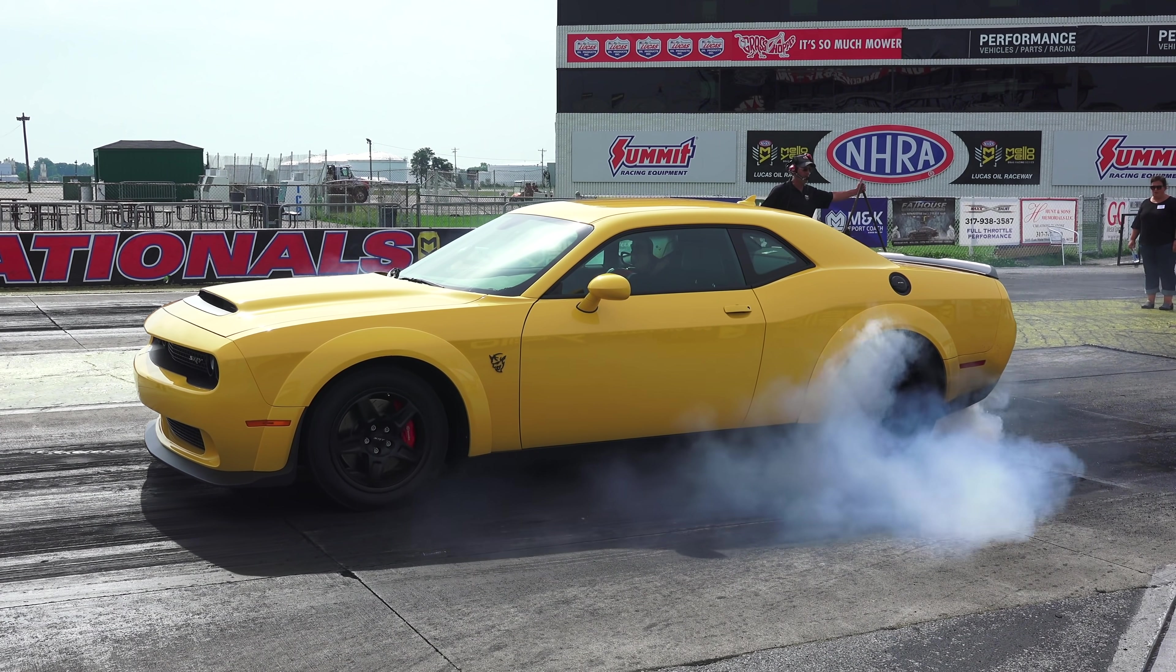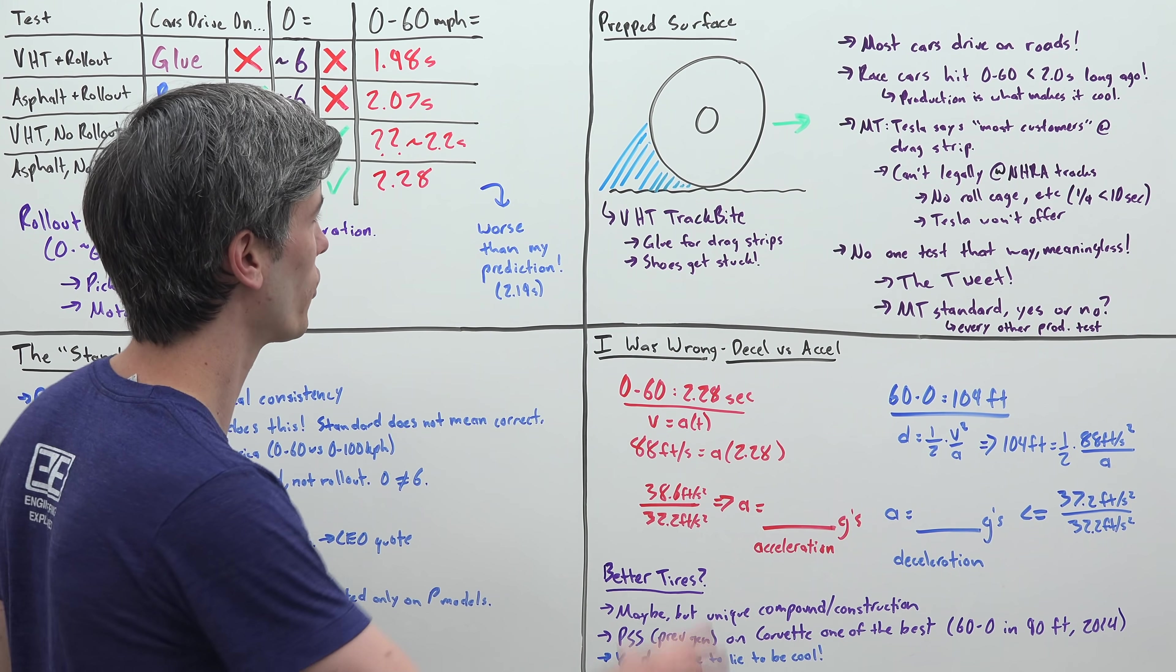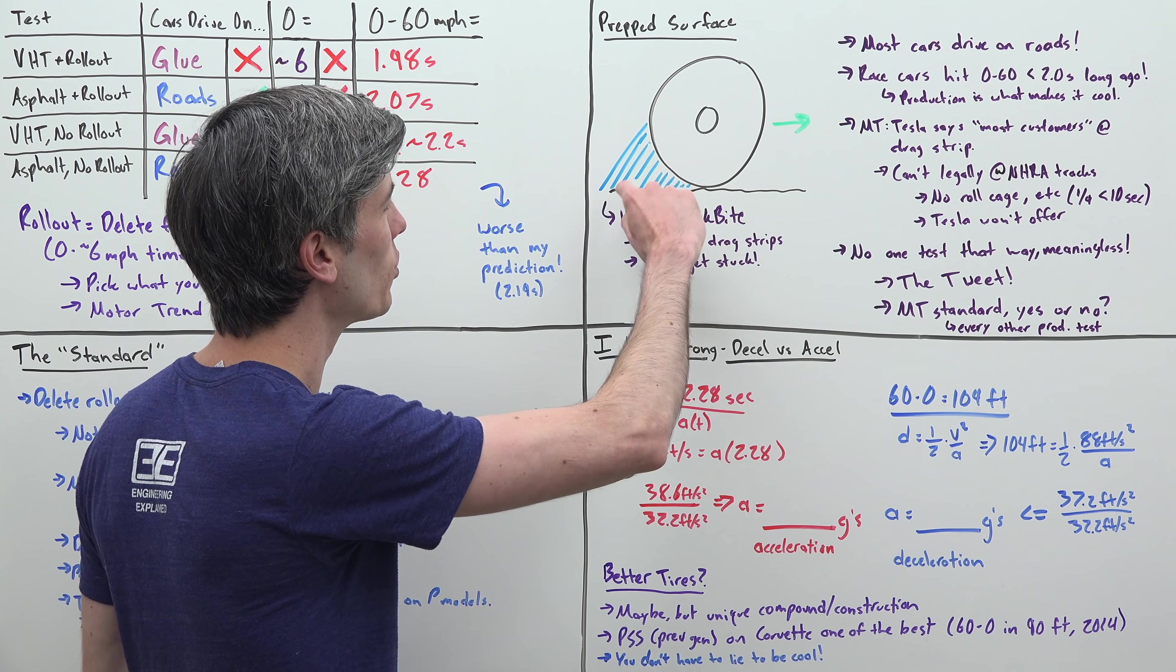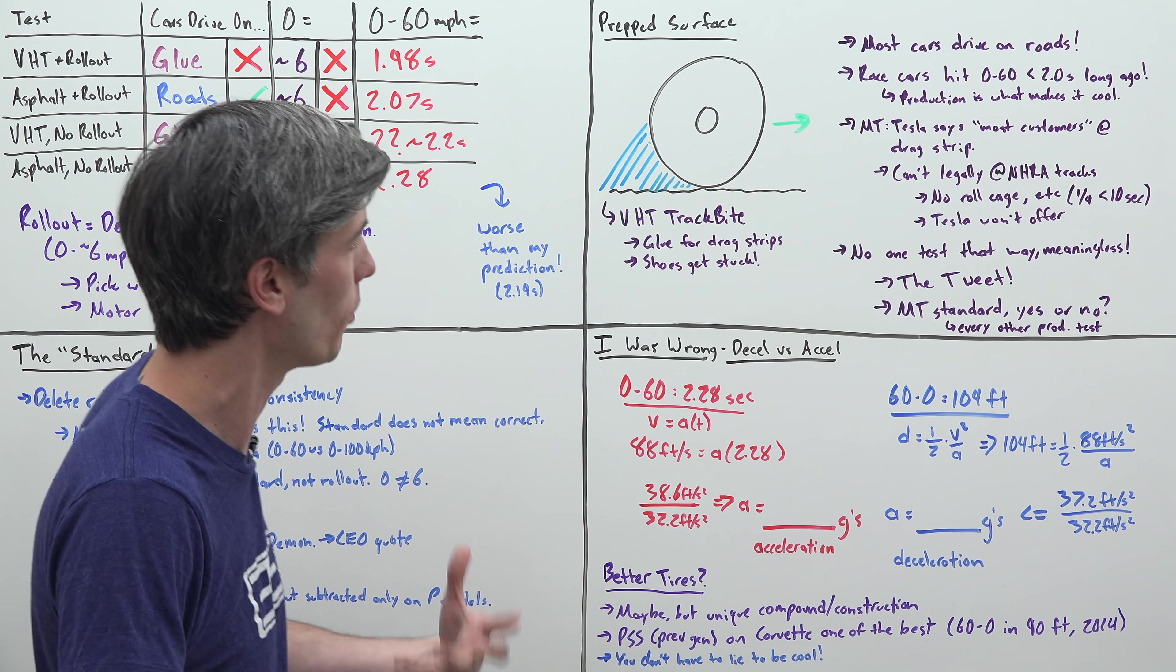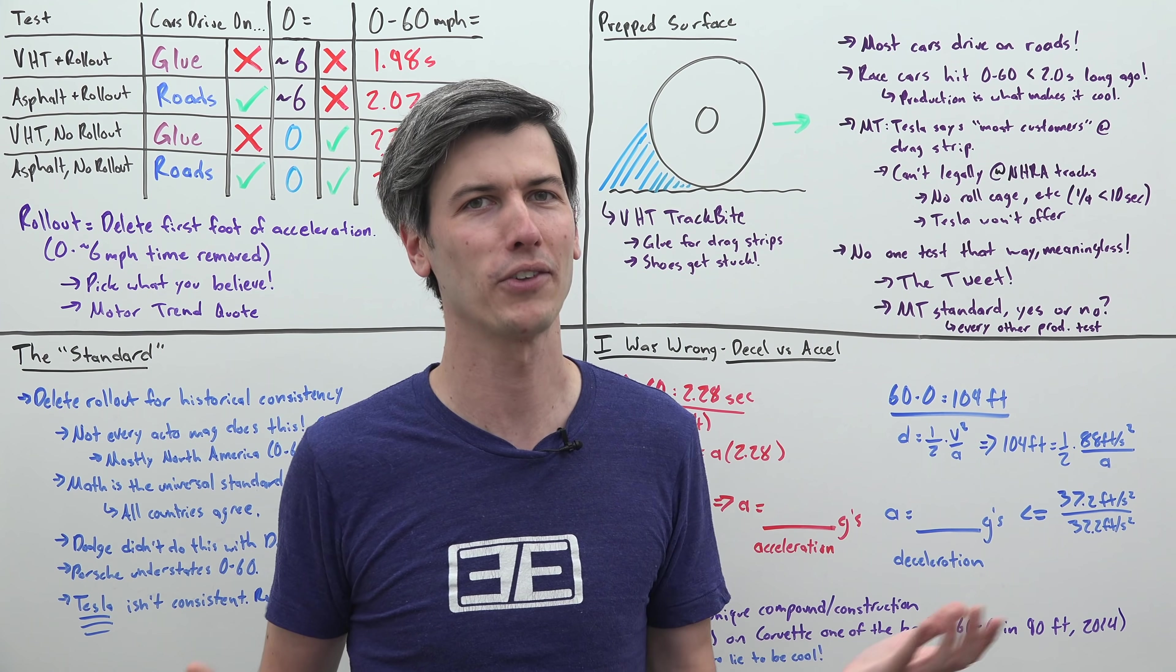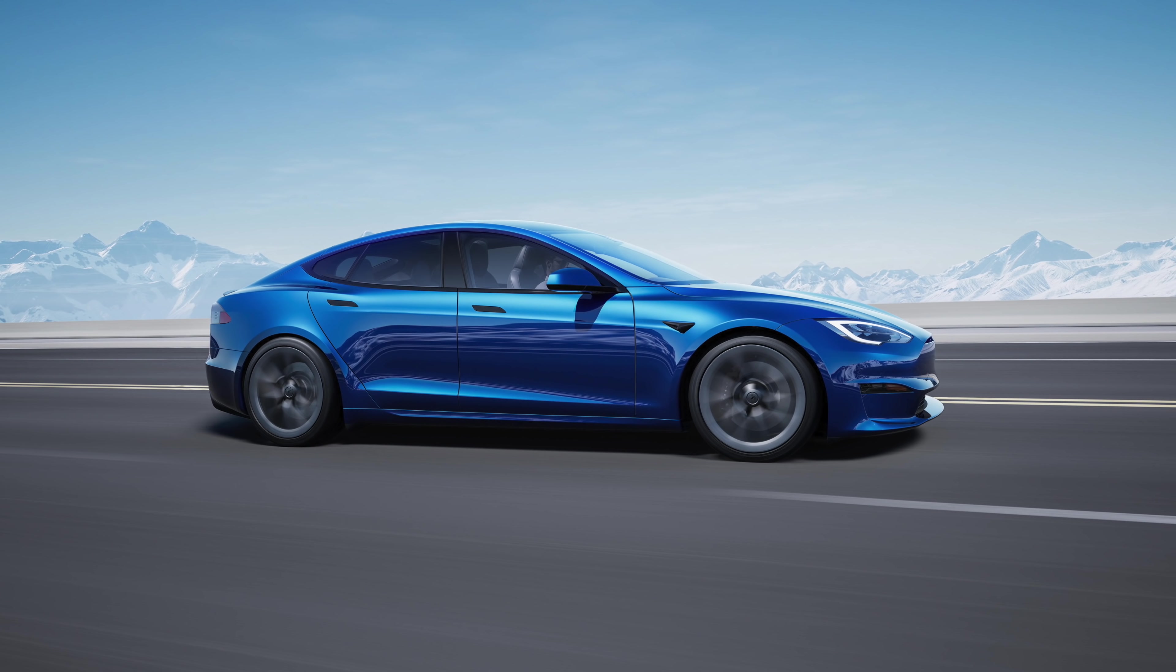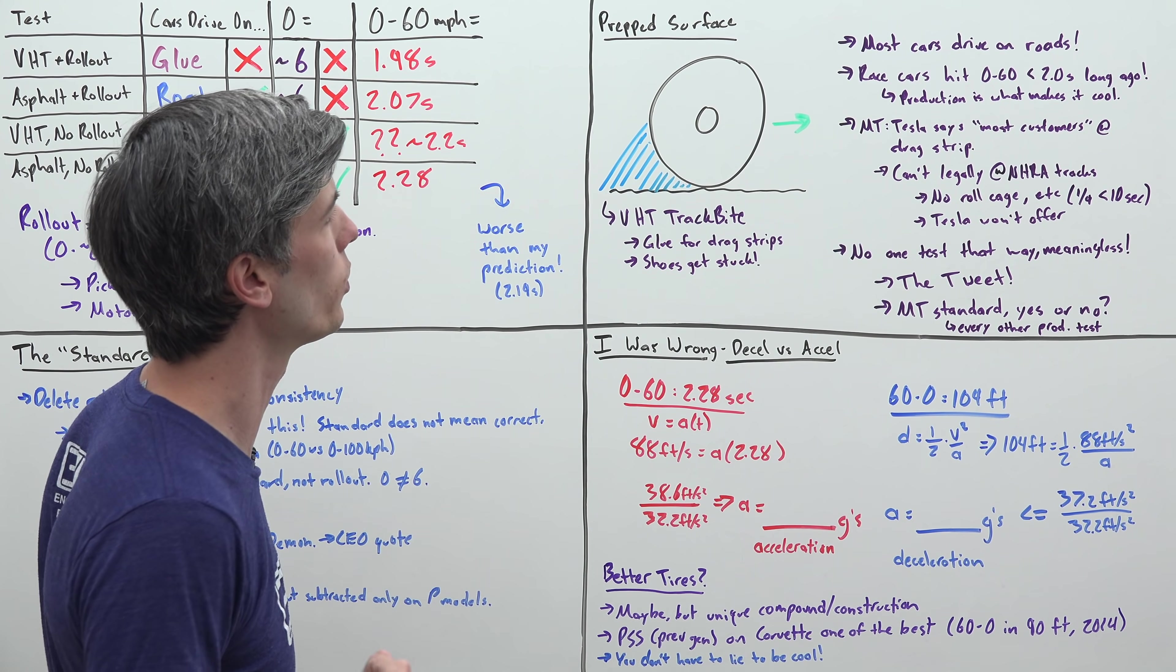Let's get into this prepped surface and talk about why this doesn't make sense. First of all, most cars drive on roads, they don't drive on glue. This stuff called VHT trackbite is basically glue to prepare a drag surface, and Motor Trend says they used quite a bit of it. If you look at images of this stuff on Google, you'll see glue attaching to the tires as it's driving. Shoes will get stuck; Motor Trend said their shoes were almost getting stuck to the surface. It's not impressive for a race car to hit 0 to 60 in under 2 seconds, plenty of them do it. What's exciting is the potential of a production car doing it in a production car environment, on a road with street legal tires.